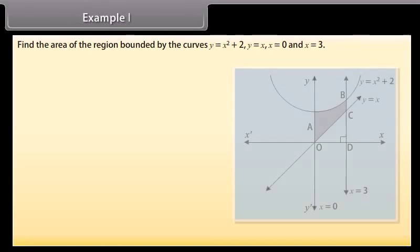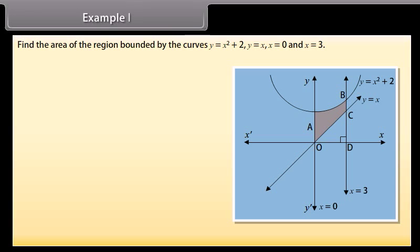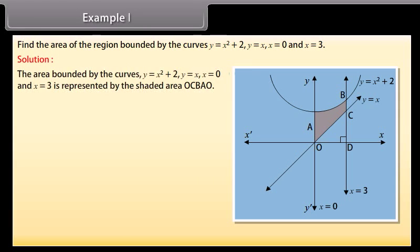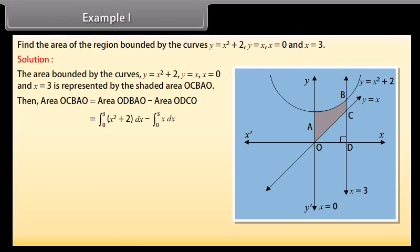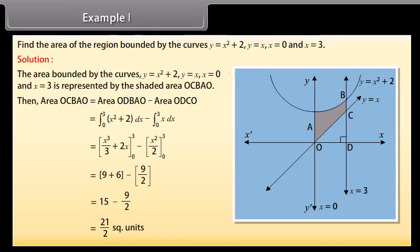Example 1: Find the area of the region bounded by the curves y = x² + 2, y = x, x = 0, and x = 3. Solution: The area bounded by the curves is represented by the shaded area OCBAO. Area of OCBAO = area of ODBAO − area of ODCO = ∫ from 0 to 3 of (x² + 2) dx − ∫ from 0 to 3 of x dx. By solving, we get 21/2 square units.